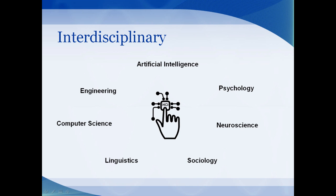One of the cool things about HCI is it's interdisciplinary. The human is a complex creature, and trying to understand how it interacts takes information from psychology, neuroscience, sociology, linguistics, computer science, engineering, and artificial intelligence. They all come together to figure out what works best.